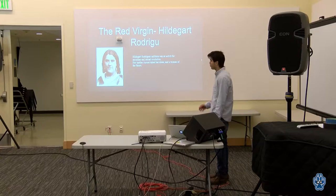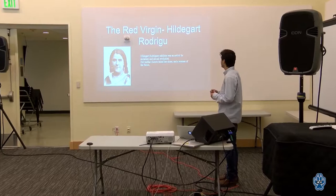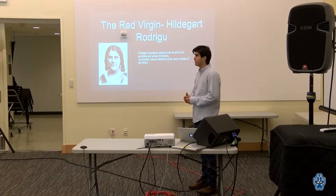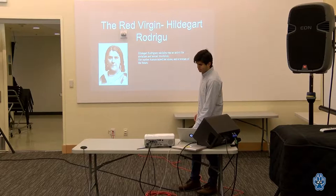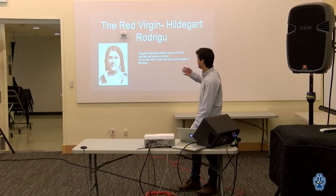A little bit of backstory on the Red Virgin: Hildegard Rodriguez Cabella was an activist for socialism and sexual revolution. Her mother Aurora raised her alone and raised her to be a woman of the future. She started reading around age two or three, graduated university before she was 12, and by 16 is when her mother killed her. She had a short life but was still able to have an impact in Spain.